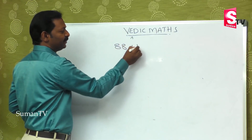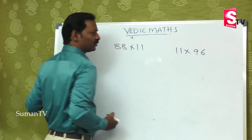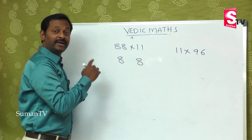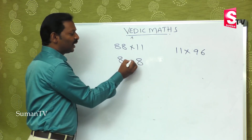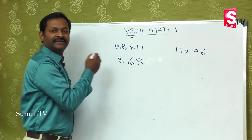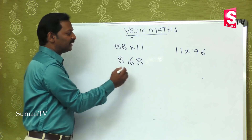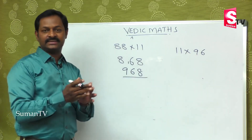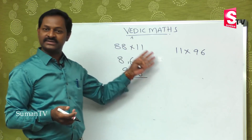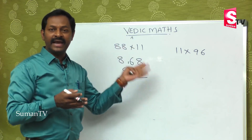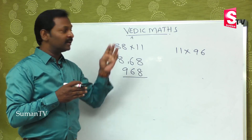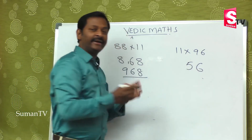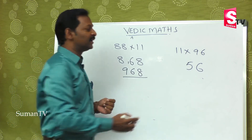Let's check 88×11 and 96×11. For 88×11: first digit is 8, last digit is 8. In between, 8+8=16, which is a 2-digit number. The 1 carries over and adds to the left 8, making it 9; the 6 stays in the middle. So the answer is 968. For 96×11: first is 9, last is 6. 9+6=15. Put 5 in the middle and carry 1 to 9, giving 10. The right answer is 1056.